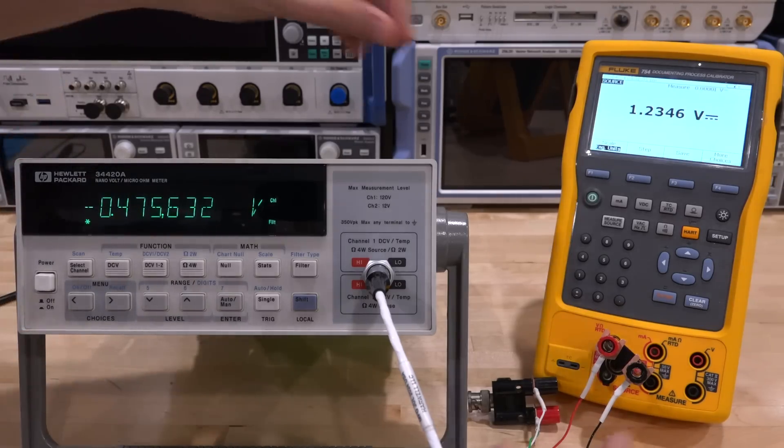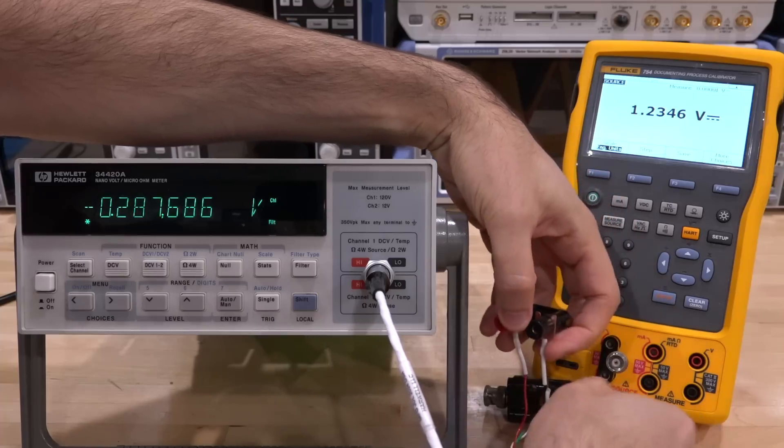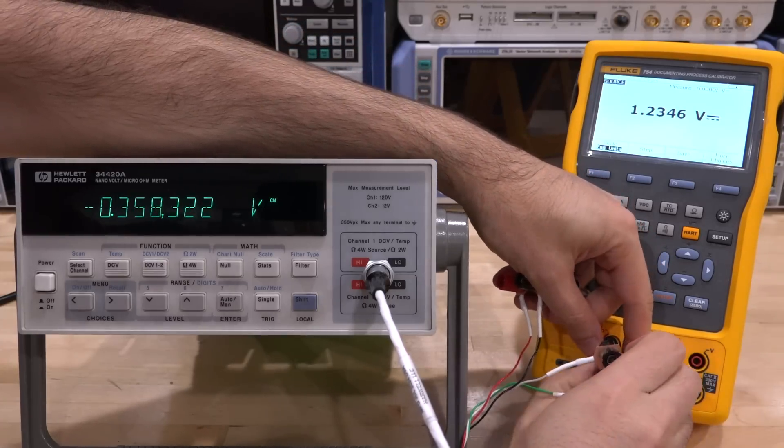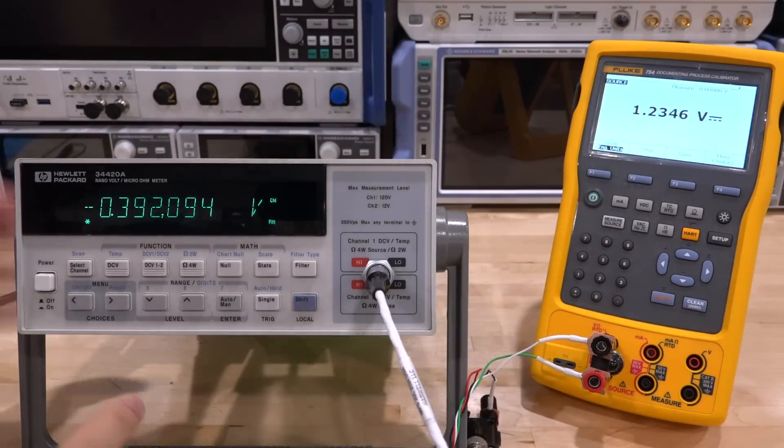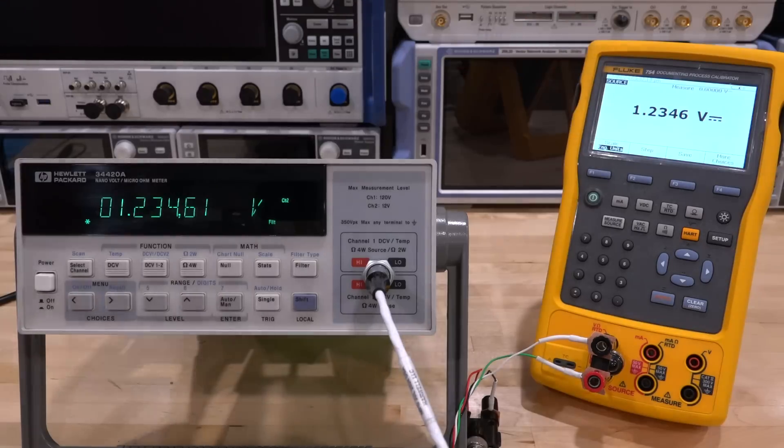But I think channel 2 works, so let's switch to that. I disconnect channel 1 and connect the other channel. All these wires are broken out separately. There we go. Now if you go to channel 2, you can see we are indeed measuring exactly the right voltage being applied by the Fluke.